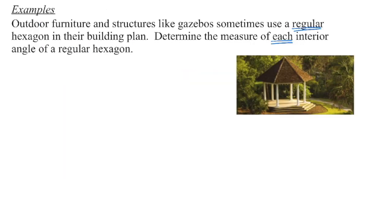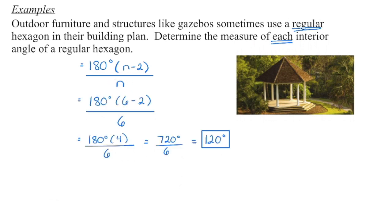In the first example, it's important to be clear whether we're looking for the sum of interior angles or each individual angle measure. We have a regular hexagon with six equal sides and six equal angles, and we need the measure of each interior angle. Using the formula [(n − 2) × 180] ÷ n, substituting n = 6, and simplifying gives each angle a measure of 120 degrees.